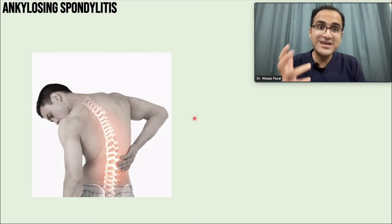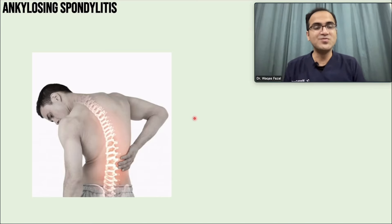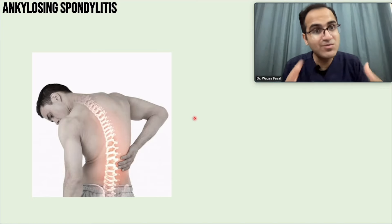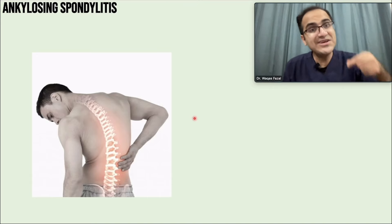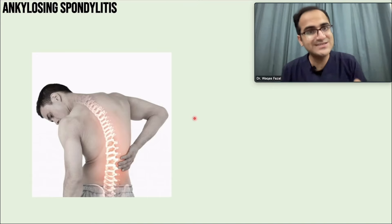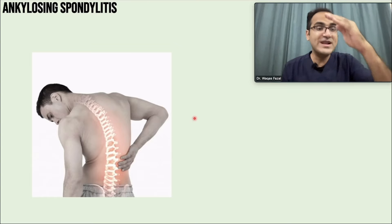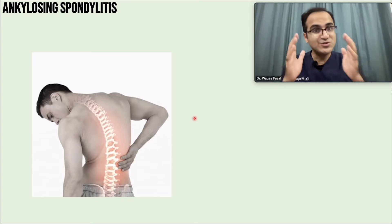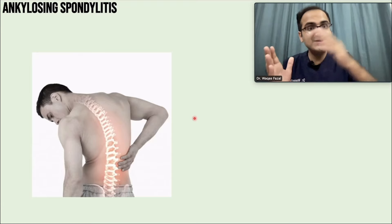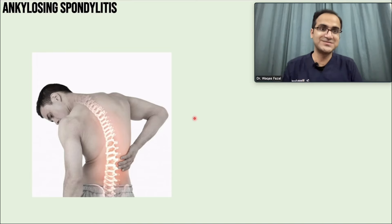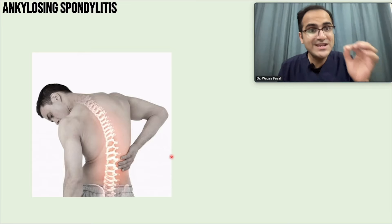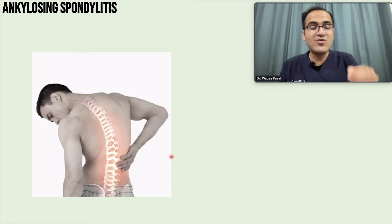When you take a detailed history, the patient tells you that the back pain is worse in the morning, worse at rest, and worse at night - but it improves with exercise and as the day passes. This is pain that improves with exercise and gets worse with rest, with morning stiffness. On examination, there is tenderness over the sacroiliac joint.